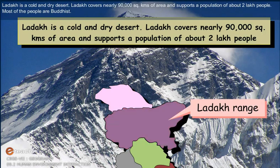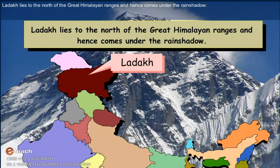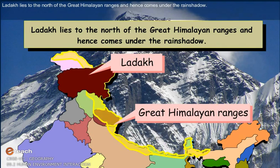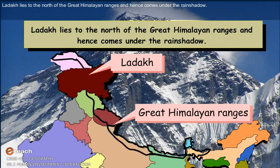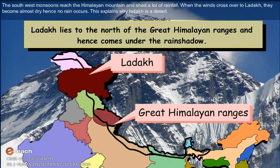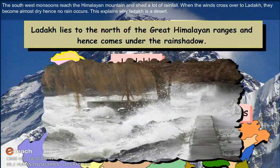Ladakh covers nearly 90,000 square kilometers of area and supports a population of about two lakh people. Most of the people are Buddhist. Ladakh lies to the north of the great Himalayan range and hence comes under the rain shadow. The southwest monsoon reaches the Himalayan mountains and sheds a lot of rainfall, but when the winds cross over to Ladakh, they become almost dry.